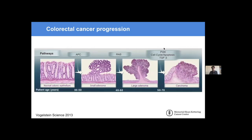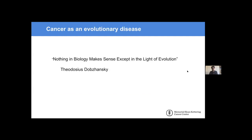This is a classic model of colorectal cancer progression. On the left-hand side is normal colon epithelium on a pathology slide — a slice of a person's tissue. As the cells accumulate these mutations in different pathways, it progresses along the road to cancer, until at the right-hand side you get this kind of disordered cellular and tissue architecture. That covers cancer as a genetic disease, which feeds into the next part: thinking about cancer as an evolutionary disease.